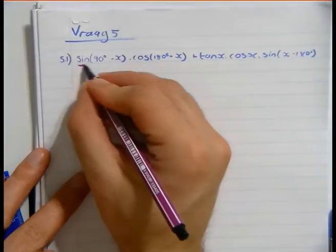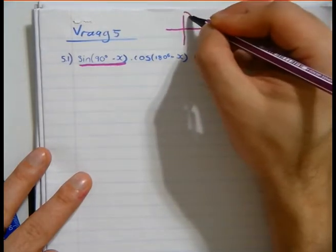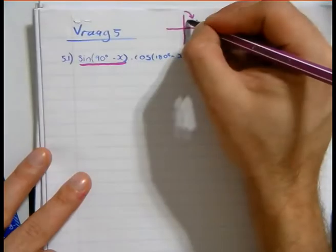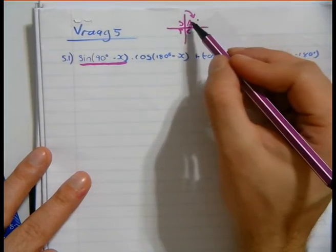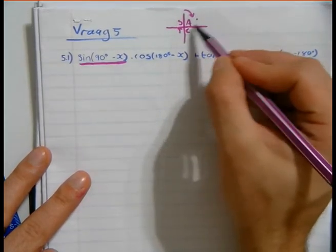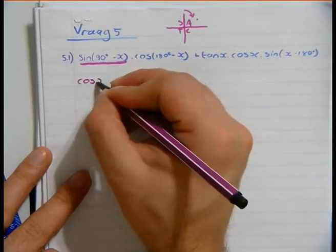Firstly, this is co-functions. Okay, so 90 minus an angle is then all silver teacups or all students take crazy, all of them positive there. So co-functional sin is cos(x) is positive.